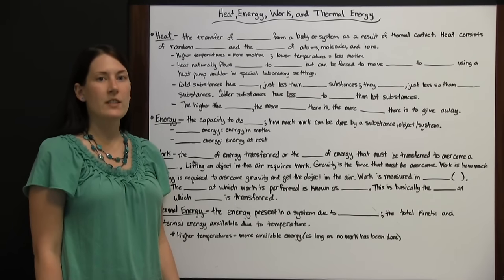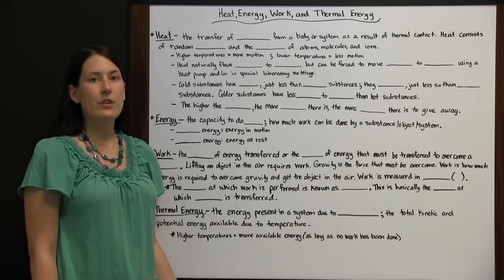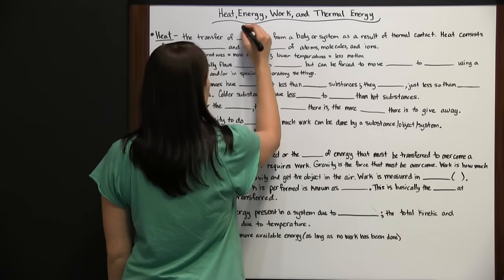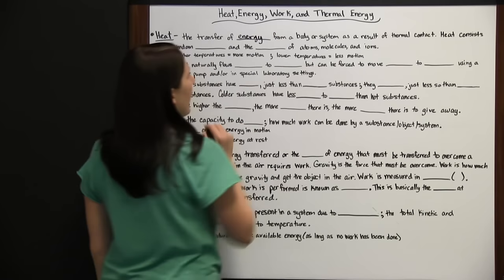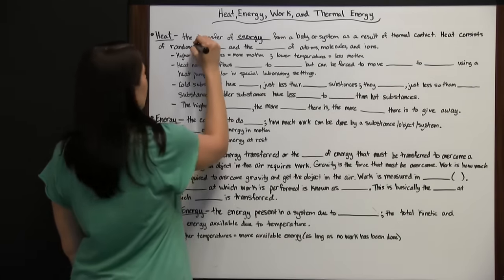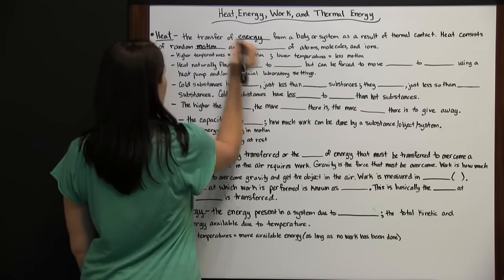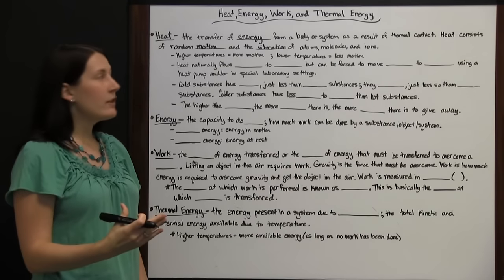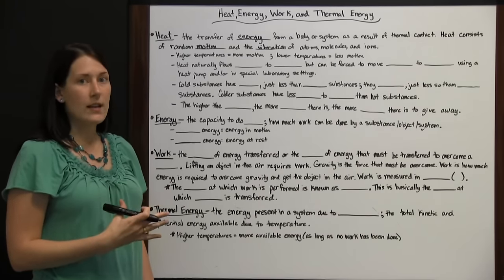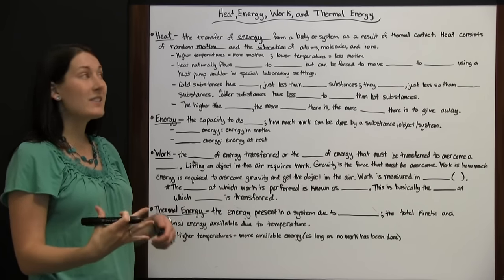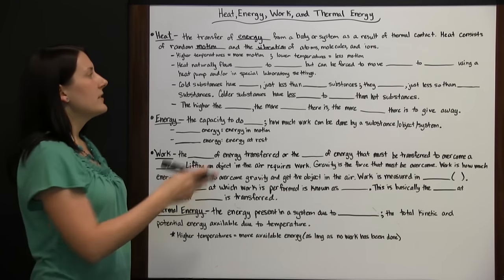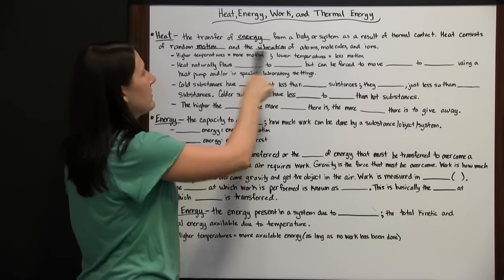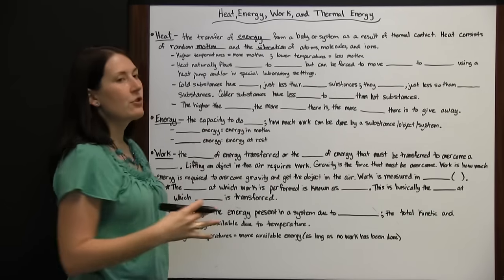Heat, energy, work, and thermal energy are all important physics terms, and it's important to know the differences between each. Heat is the transfer of energy from a body or system as a result of thermal contact. Heat consists of random motion and the vibration of atoms, molecules, and ions. Two things have to touch and energy is transferred based on temperature — higher temperatures equal more motion, while lower temperatures have less motion.